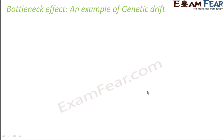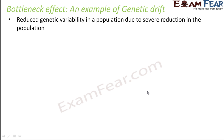Natural disasters like floods or earthquakes can greatly reduce the population, because during a flood or an earthquake, a huge number of individuals die. So the population reduces greatly, and the genetic variability also reduces — that is, there is reduced genetic variability in a population due to a severe reduction in population size.